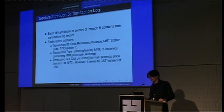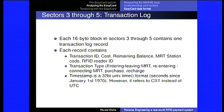Other sectors contain the transaction log — the last few operations performed with the card. It includes a transaction identifier, the cost (amount of money involved), the remaining balance, which MRT station it happened at, the RFID reader ID, whether you were entering or leaving the station, or purchasing something or recharging at a recharge machine. There's also a timestamp, conveniently stored as a 32-bit UNIX time format in seconds since the epoch — though it refers to Chinese standard time, not UTC.